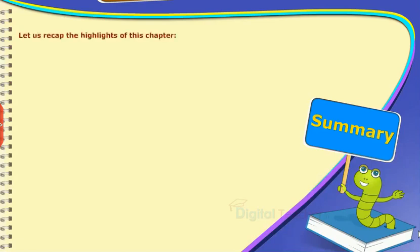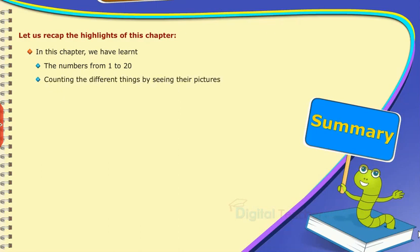Summary: Let us recap the highlights of this chapter. In this chapter, we have learnt the numbers from 1 to 20, counting the different things by seeing their pictures, and identifying the smallest and the biggest numbers from the given set of numbers.